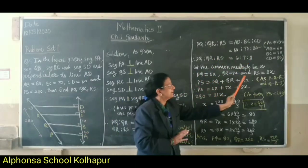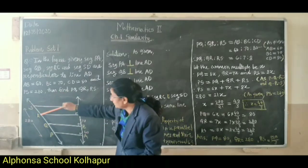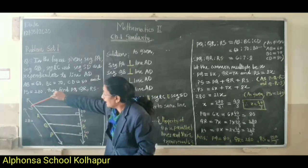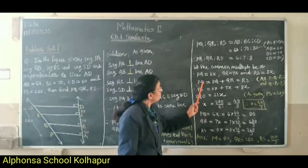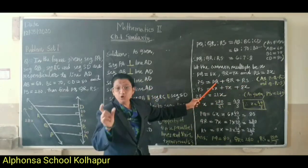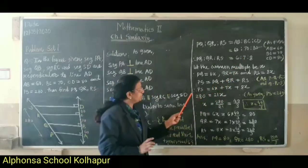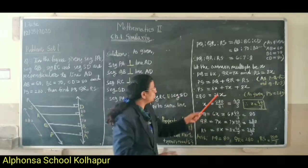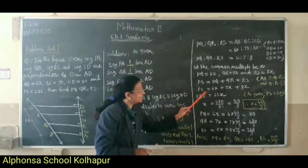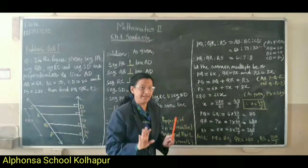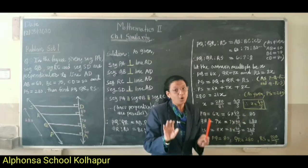Since points P, Q, R, S are collinear, PS is equal to PQ plus QR plus RS. Substituting, PS equals 6x plus 7x plus 8x equals 21x. The given value of PS is 280, so 280 equals 21x, which gives x equal to 280 upon 21, that is 40 upon 3.